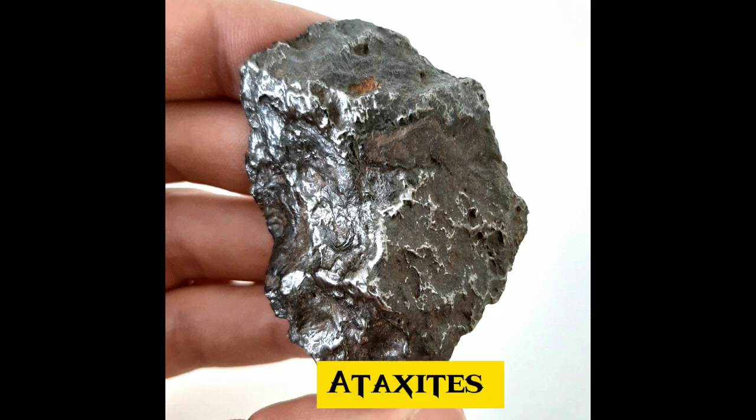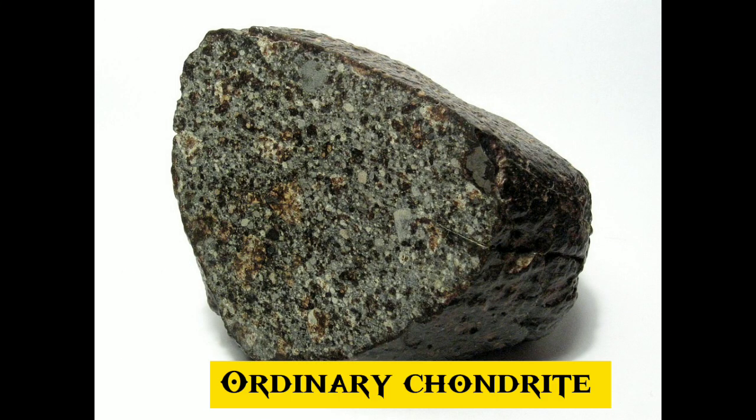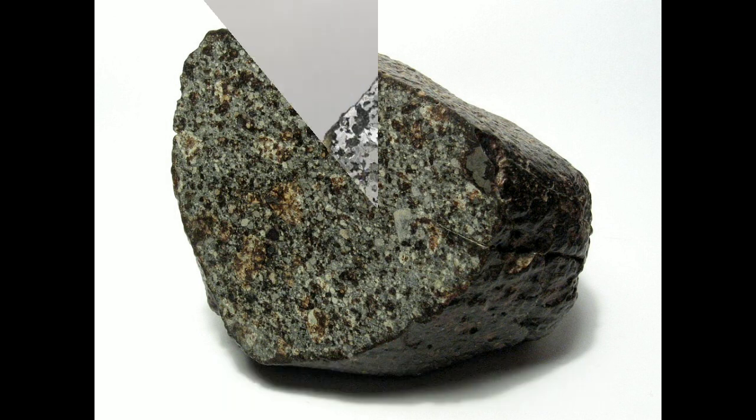13. Ataxites are a structural class of iron meteorites with a high nickel content and show no Widmanstätten patterns upon etching. 14. The ordinary chondrites are a class of stony chondritic meteorites. They are by far the most numerous group and comprise about 87% of all finds.